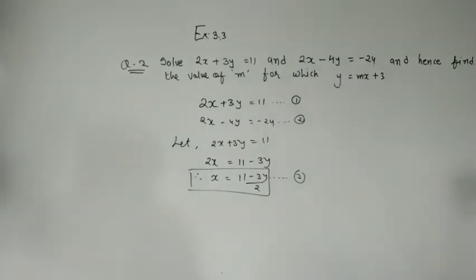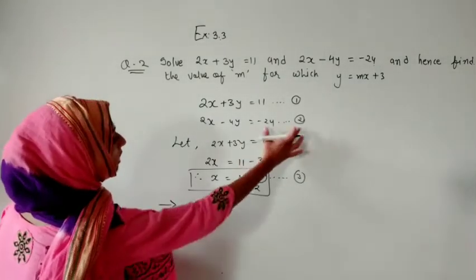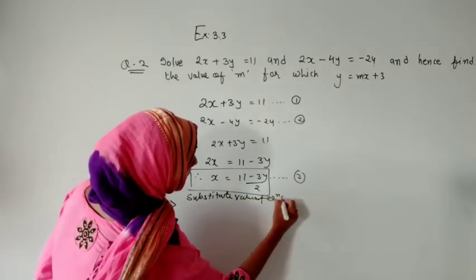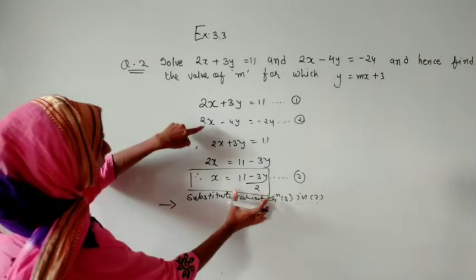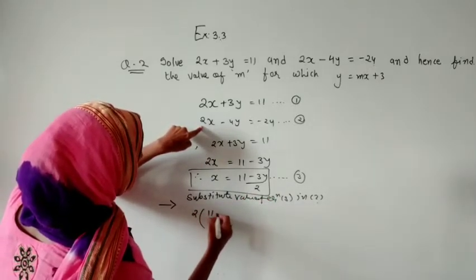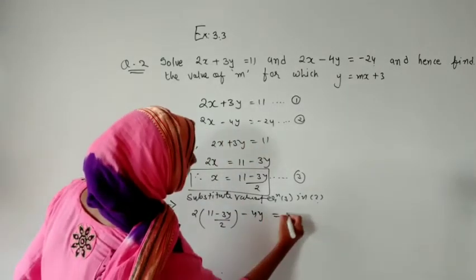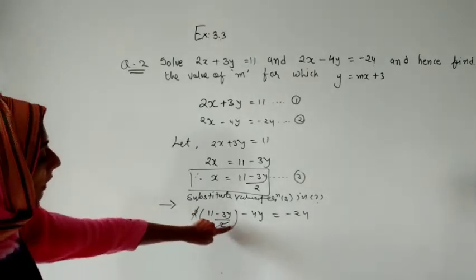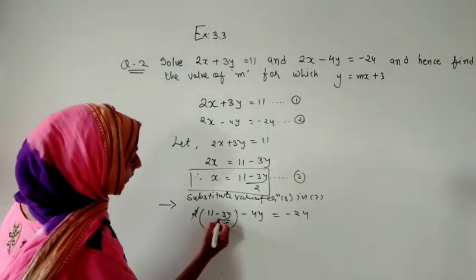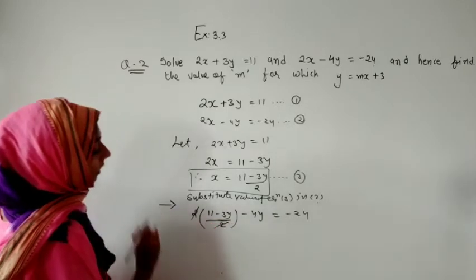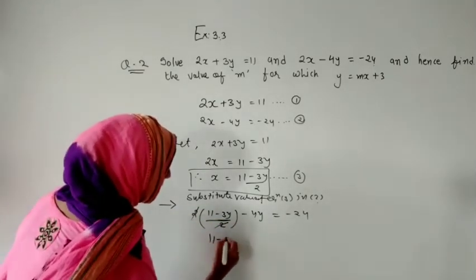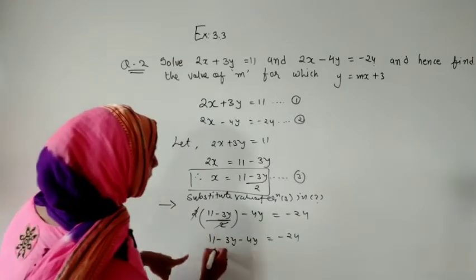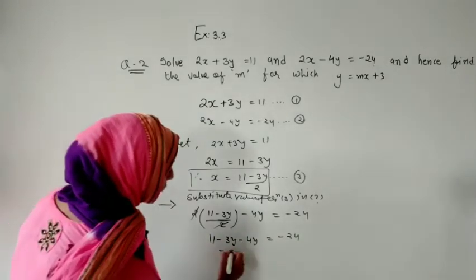We will use equation 3 in equation number 2. Substituting the value of x: 2 times (11 minus 3y) divided by 2, minus 4y, equals minus 24. The 2 in the numerator and denominator cancel out, giving 11 minus 3y minus 4y equals minus 24. Be careful with the minus sign here.